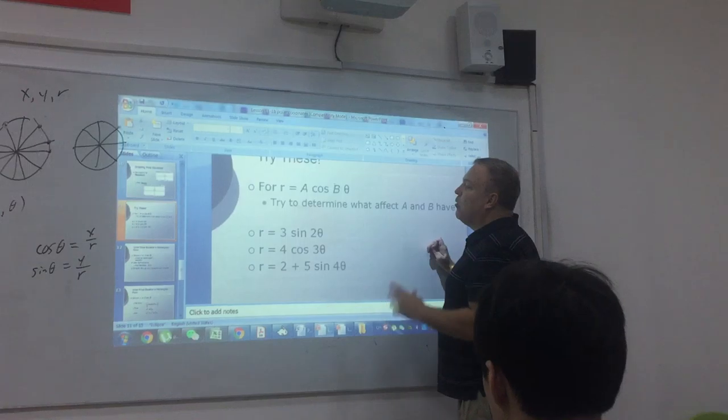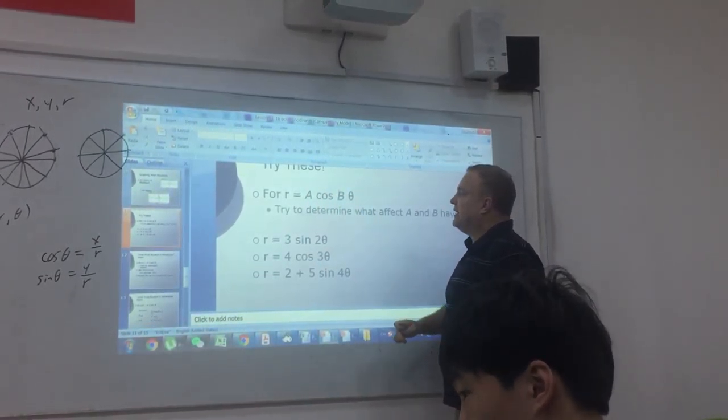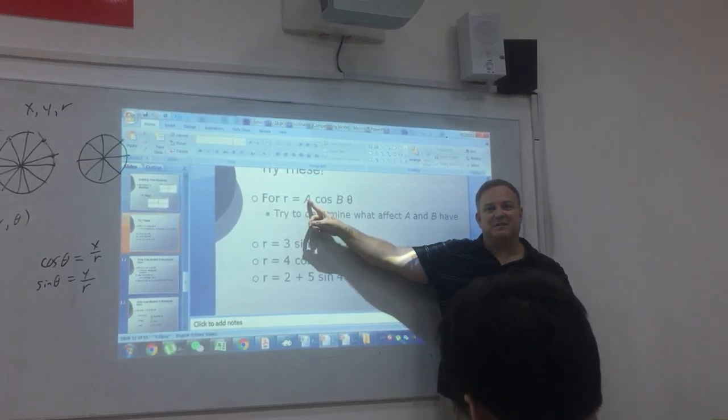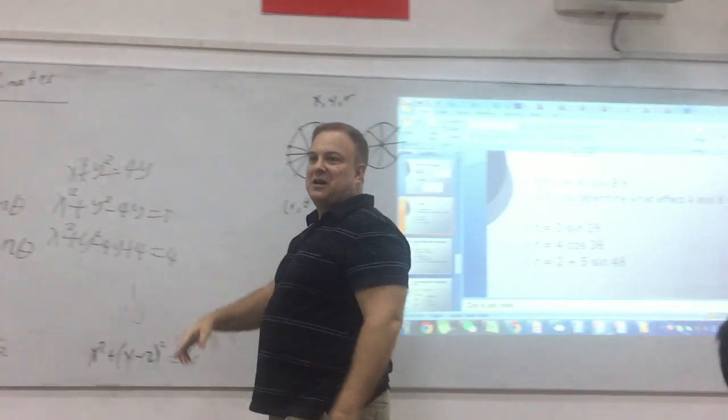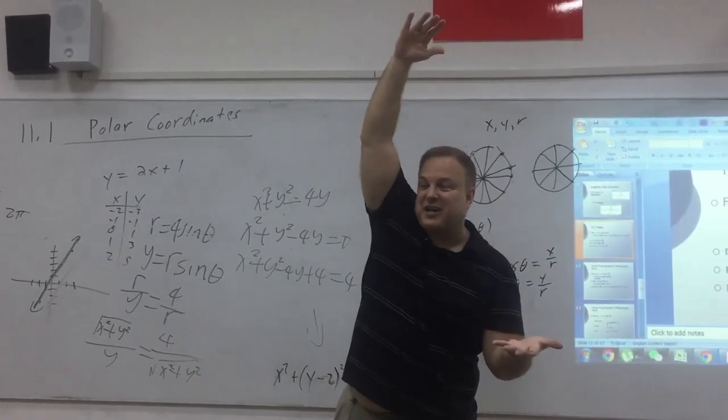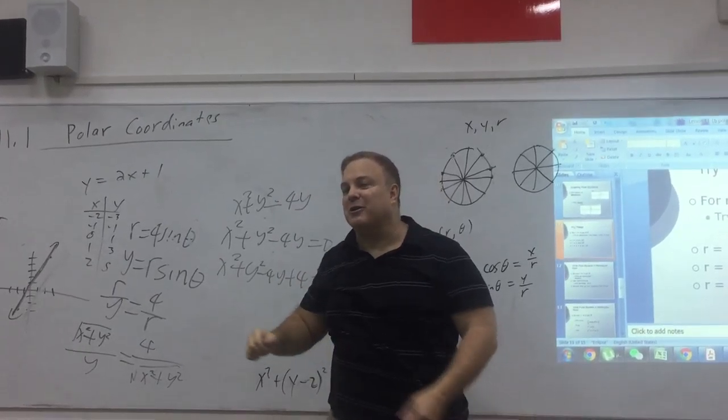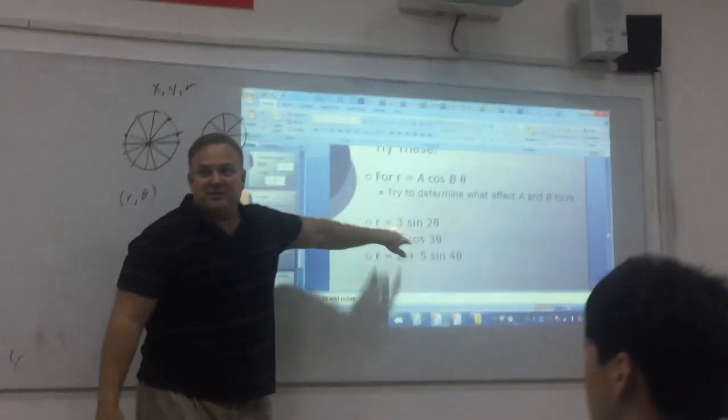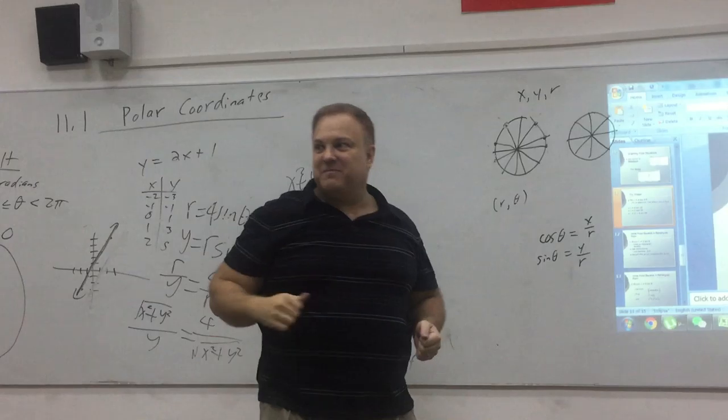We want to see what happens as we change basically the A and the B. Now if you think about it, when A gets bigger, isn't that kind of like an amplitude? Now, if you were graphing in rectangular, a bigger amplitude just means further from the x-axis, right? And polar, it means further from the center. So the bigger this number is, as you go around the circle, you're further away. Does that make sense?